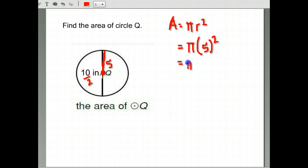We have pi times 5 squared. 5 times 5 is 25. Use the pi button on your calculator so you get the best exact answer here.